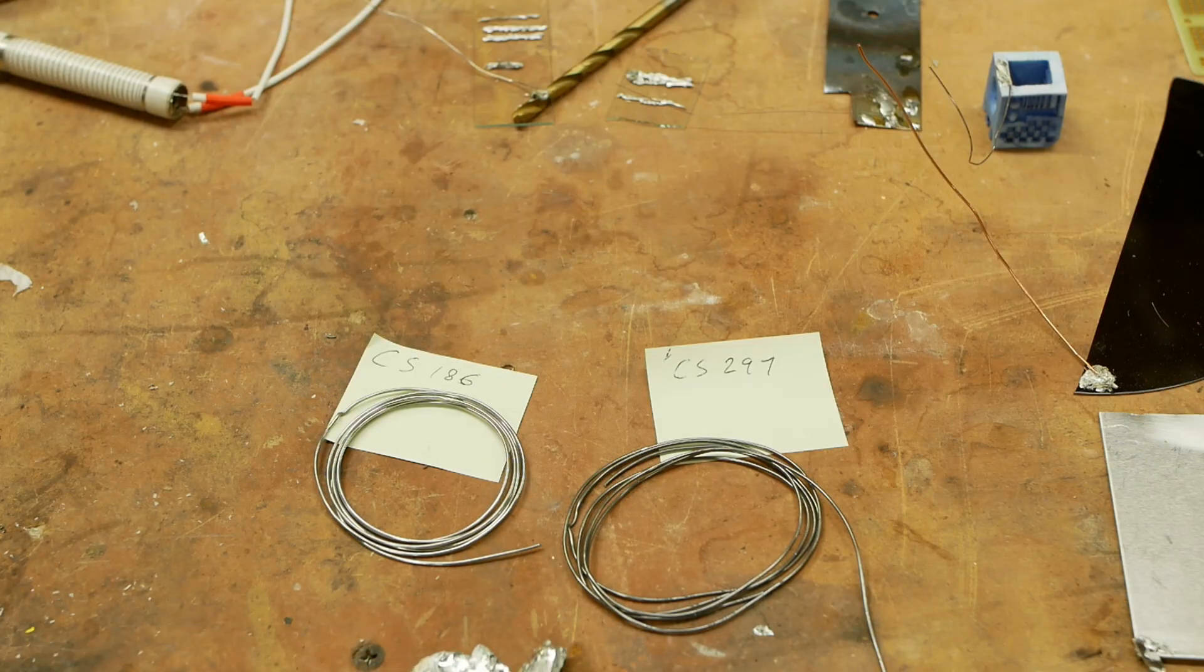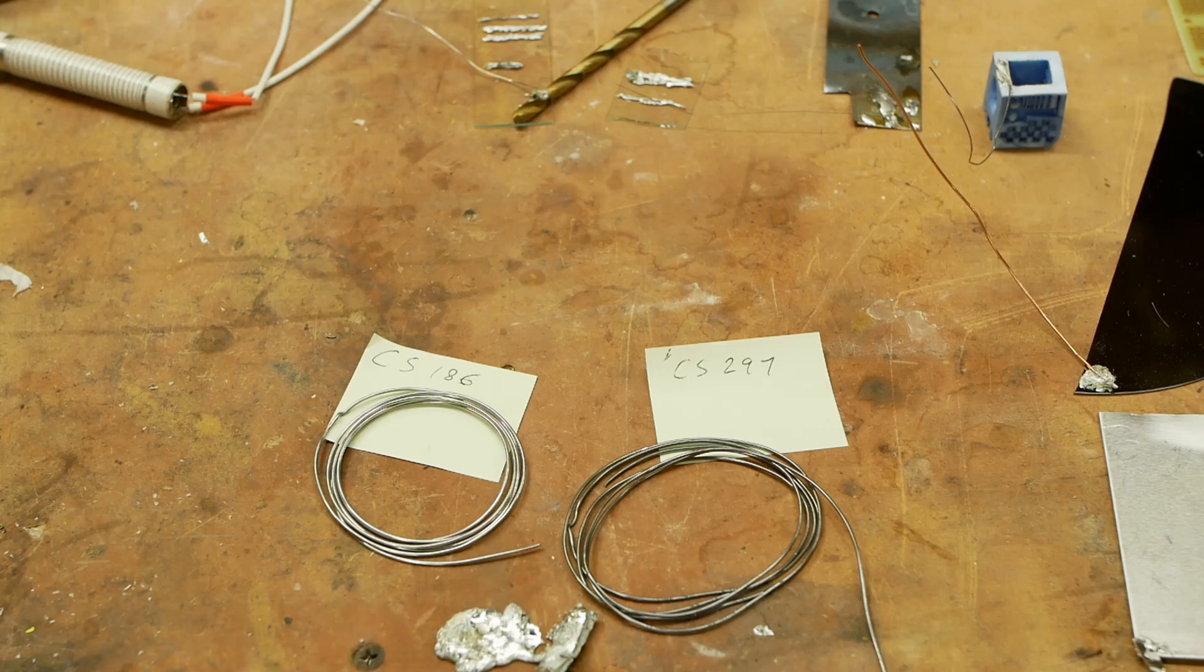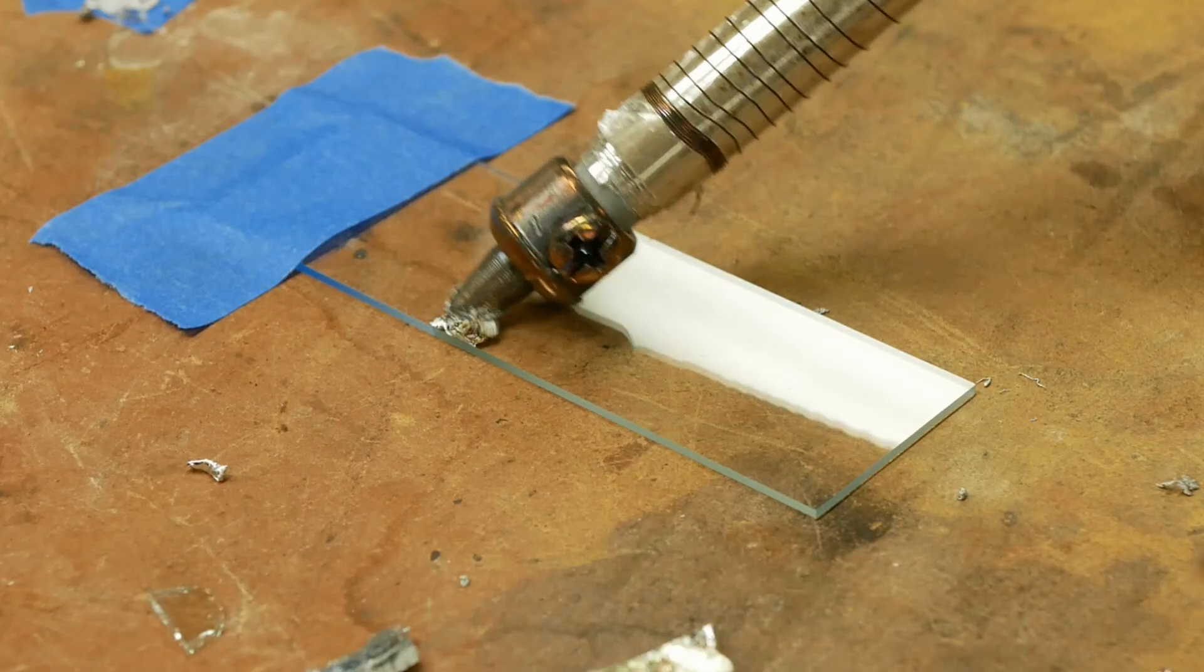And normally, electronics folks sometimes prefer leaded solder because it flows more easily. But in this active soldering, there is no such thing as flowing. Like, you can't reflow these active solders. You have to have the mechanical energy and everything.